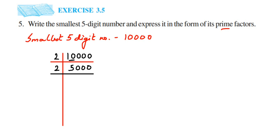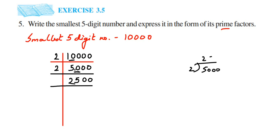5,000 is an even number — any number ending in 0, 2, 4, 6, or 8 goes into the two times table. So I divide 5,000 by 2 again. 2 goes into 5 twice with remainder 1; that 1 combines with the next 0 to make 10; 2 fives are 10; bringing down the remaining zeros gives 2,500.